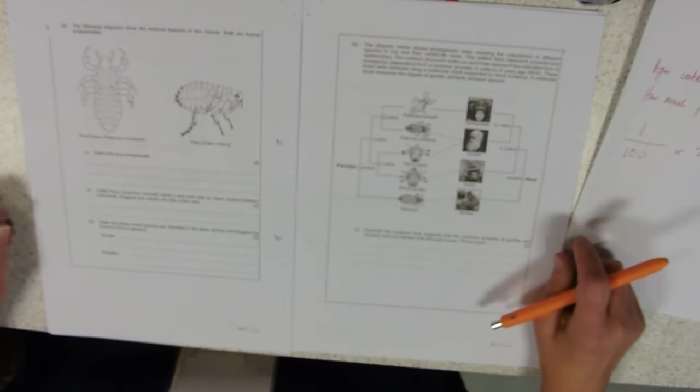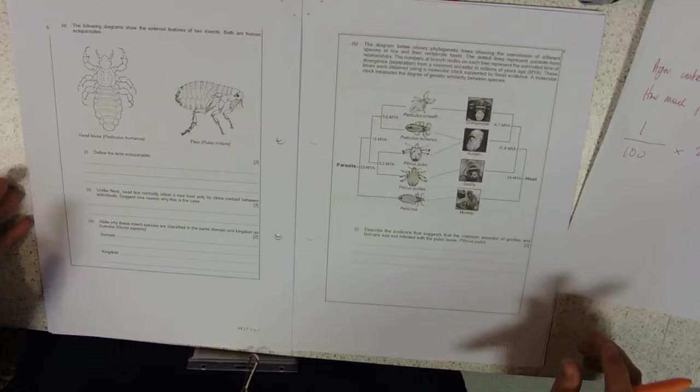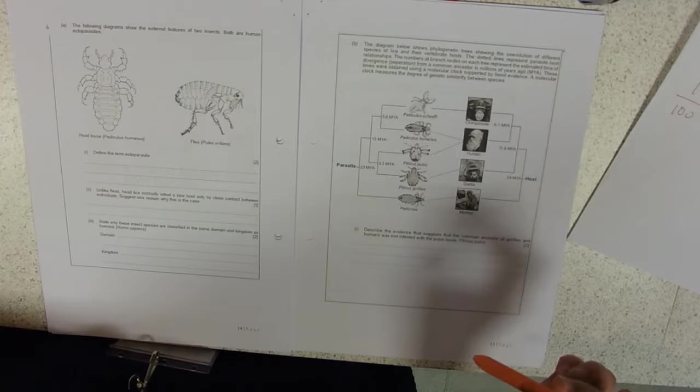This is about my eighth go at doing this video. I am gonna get it all done in one go without the swearing. The following diagrams show the external features of two insects, both are human ectoparasites.